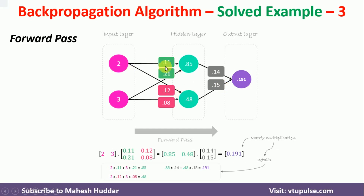To move this input from input layer to output layer, we apply two things: one is called the summation function and the second one is the activation function. To keep it simple, I am not going to consider any activation function here — just the summation function. To get the output at the hidden layer, we use the equation: 2 multiplied by 0.11 plus 3 multiplied by 0.21. Similarly, the output at H2 is 2 multiplied by 0.12 plus 3 multiplied by 0.08, which gives 0.48. Once we get the outputs at the hidden layer, we multiply these by the weights to get the output at the output layer.